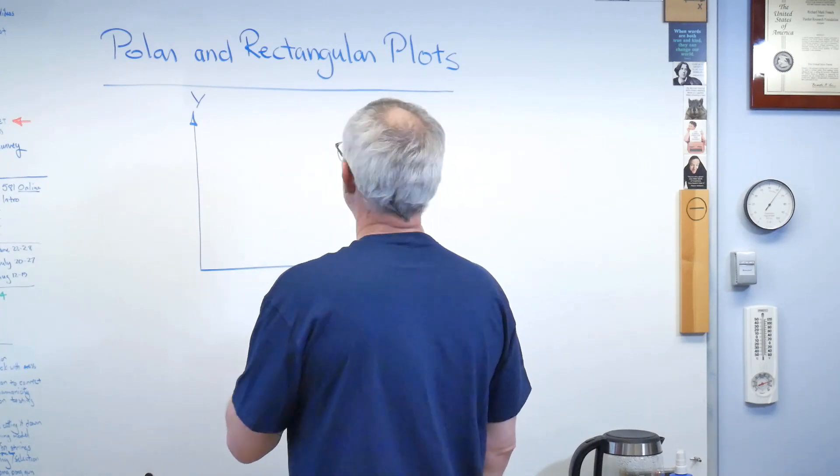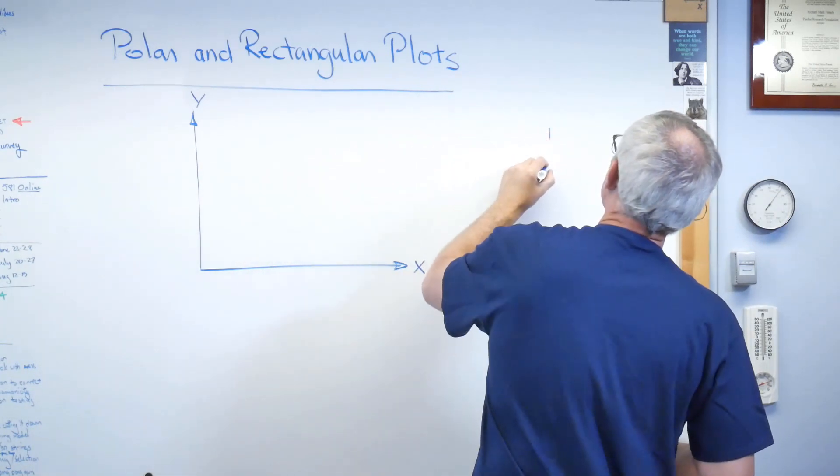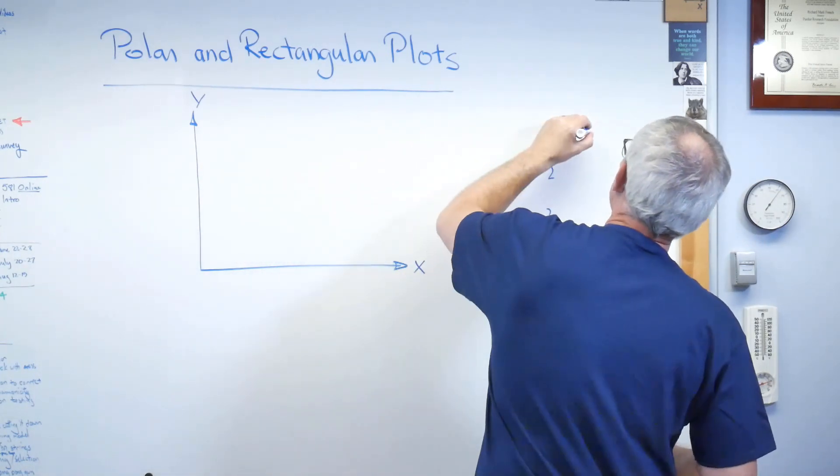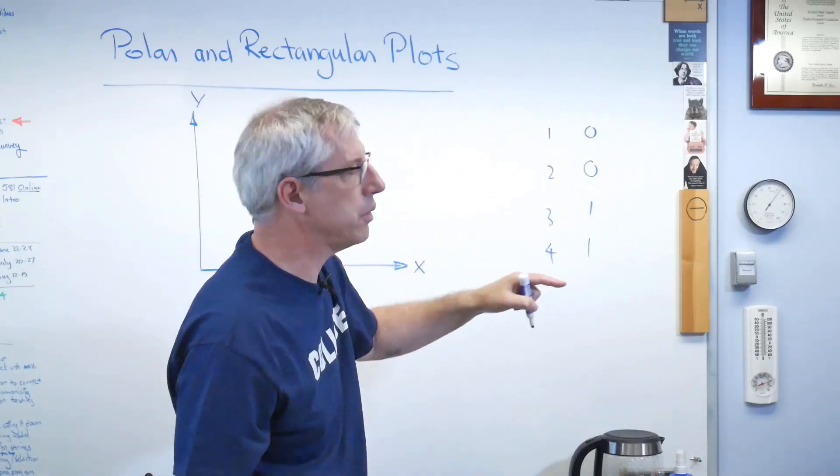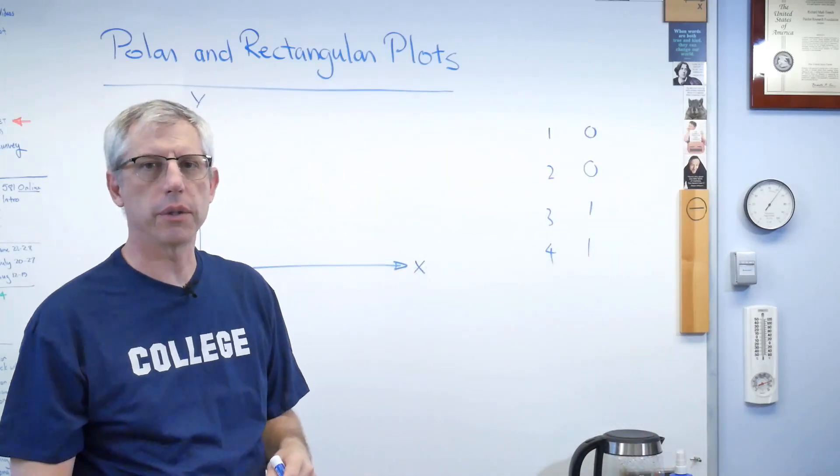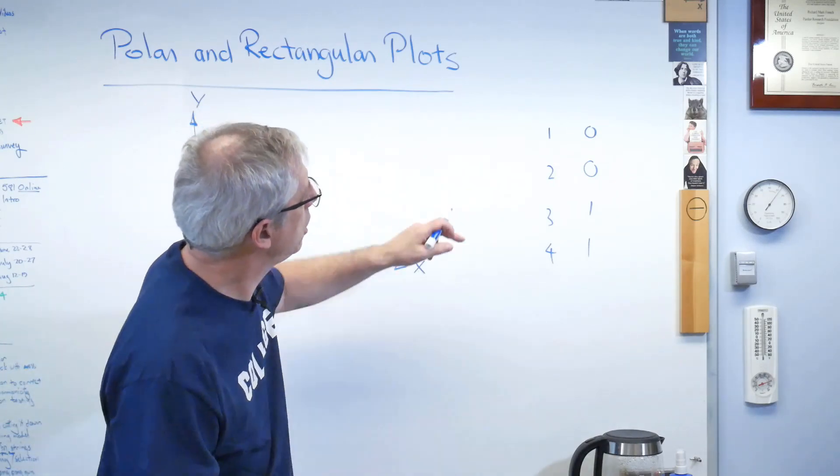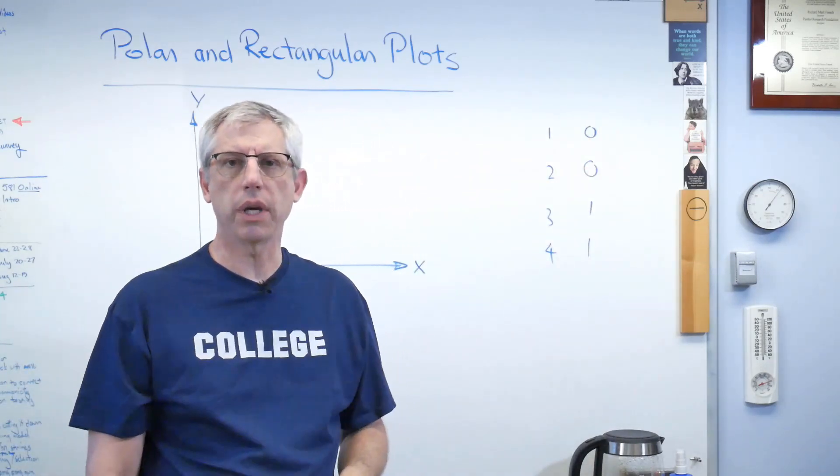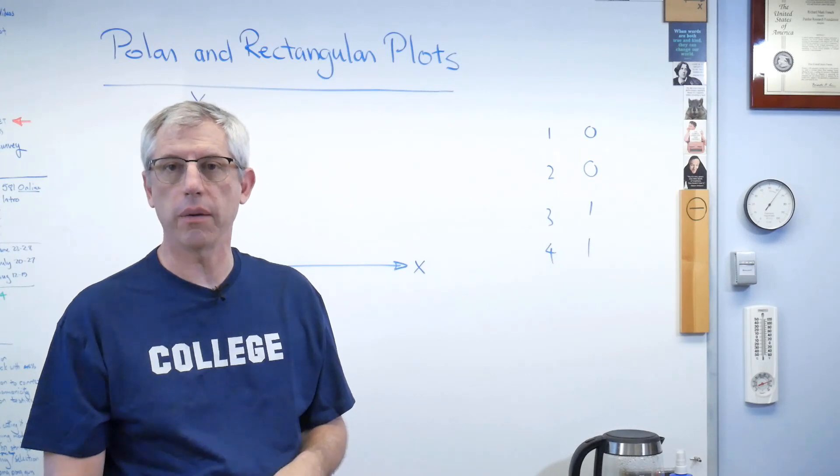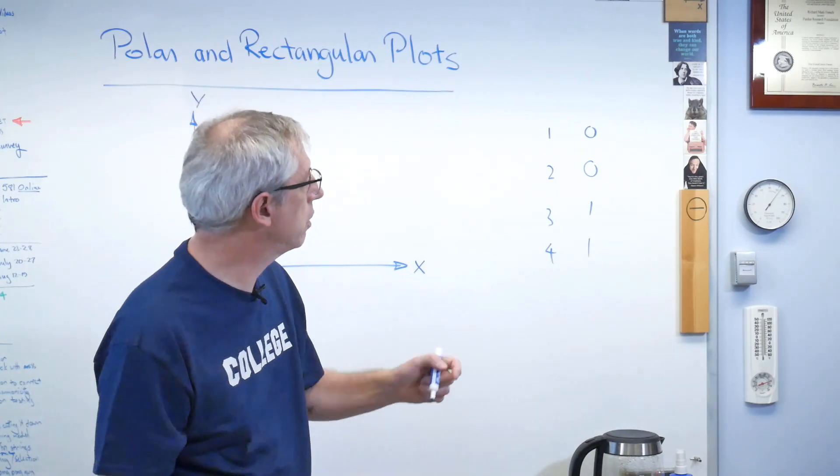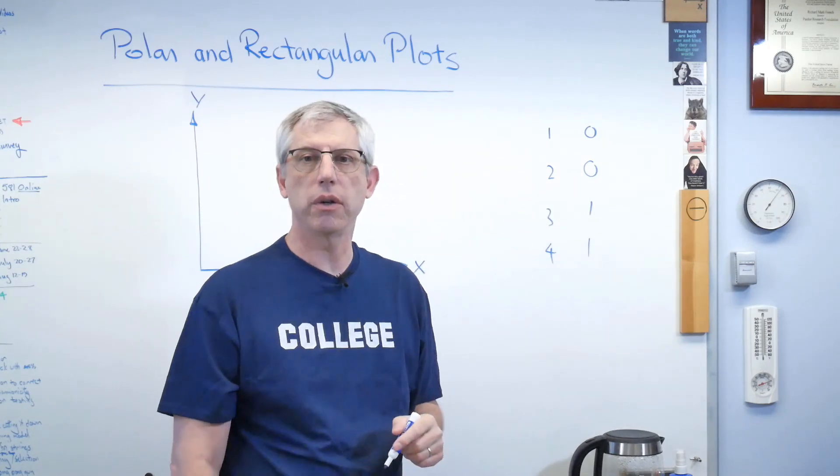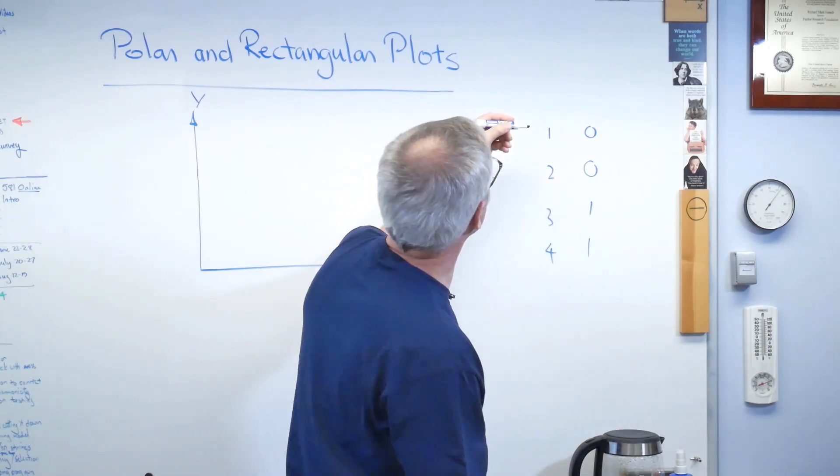So if I have two sets of numbers, three, four, I'll just make up some numbers, zero, zero, one, one. Okay, there's a row of numbers or column of numbers and there's a column of numbers. As human beings, we're not very good at looking at lists of numbers and extracting meaning from them. We're much better at looking at pictures. So it makes good sense to try to turn that into a picture. Well, how do you do it?